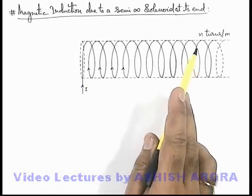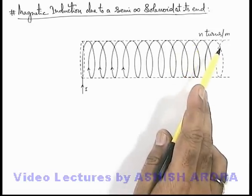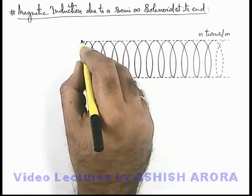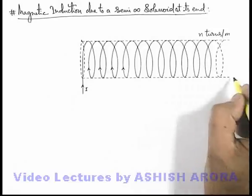of linear turn density n turns per meter, whose one end is finite and the other end extends to infinity.